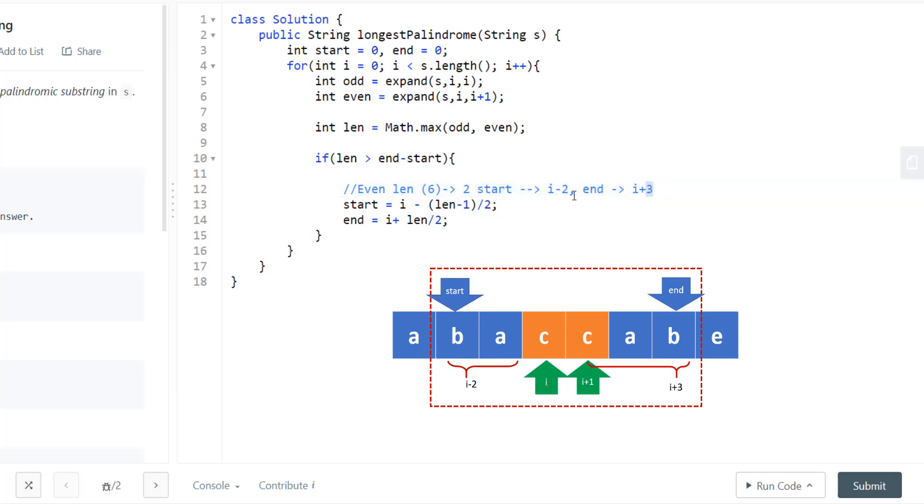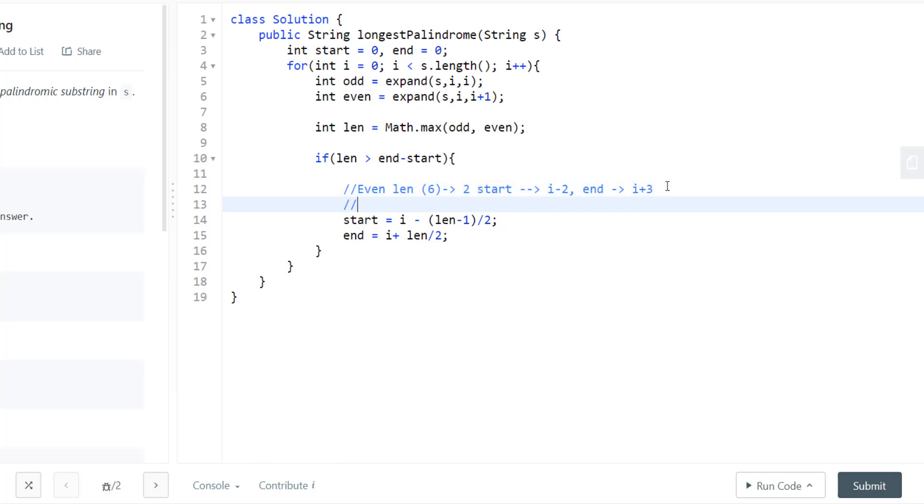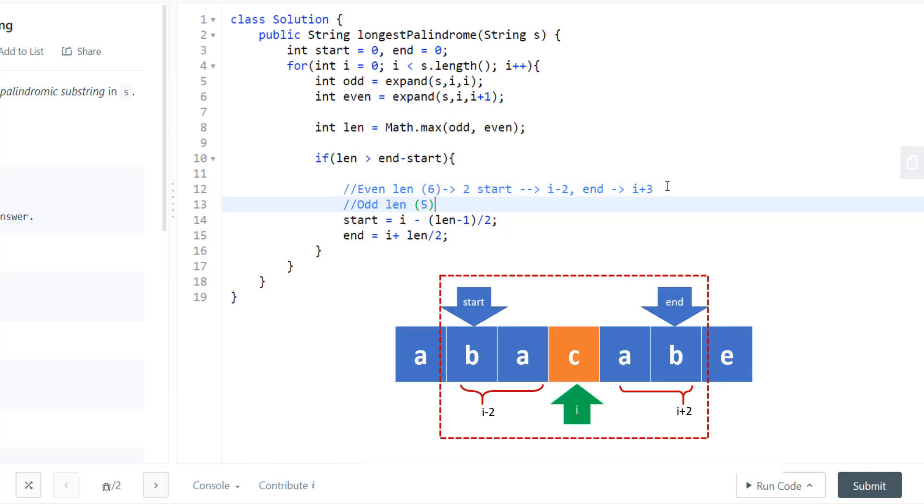If you see that 2 and 3, we are getting two different numbers. To get this 2, we'll have to do length minus 1 by 2. Why we are getting this 3? Because for even length, we have the center as i and i plus 1. If you do this for odd, say 5, my i will be at position 2 now also. My start will be i minus 2 and my end will be i plus 2.